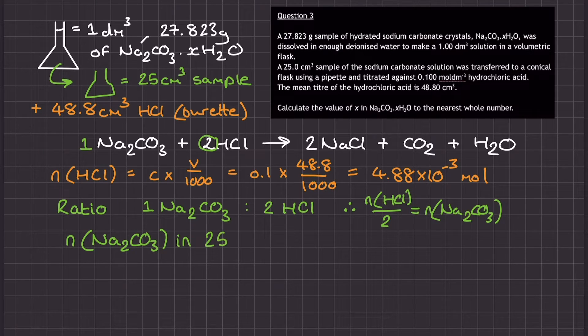I'll have the number of moles of the Na2CO3, the sodium carbonate, in the 25 centimetre cubed sample used in the titration. That gives me a value of 2.44 times 10 to the power of negative 3 mole.